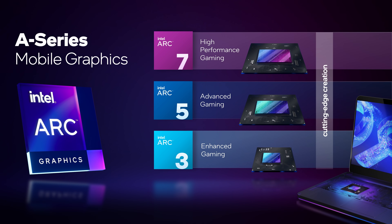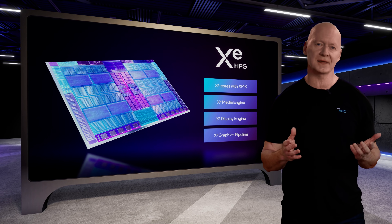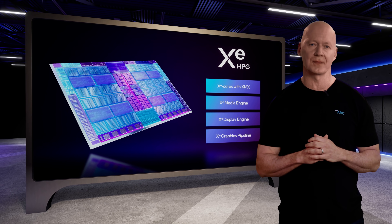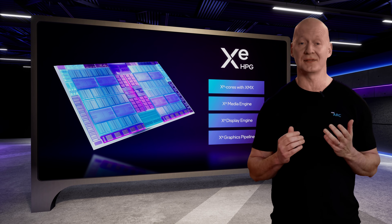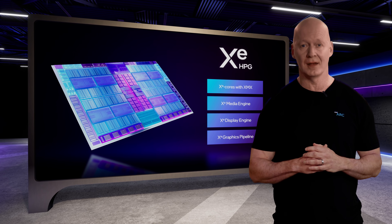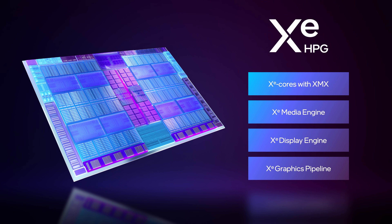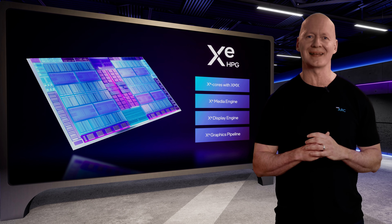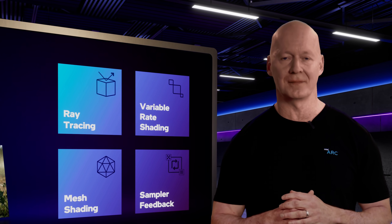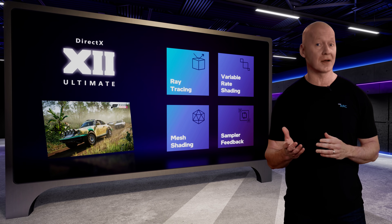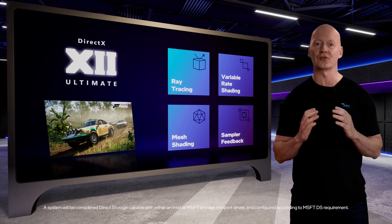Arc 5 and 7 products offer the same advanced content creation capabilities with higher graphics and compute performance. All Arc products start with our new Xe High Performance Graphics Micro Architecture, with the same powerful Xe cores with integrated AI engines that we call XMX, for accelerating AI workloads like our upcoming XeSS upscaling technology. And a new media engine tuned to accelerate existing and future creator workloads. Every Arc GPU offers full support for DirectX 12 Ultimate, including hardware-accelerated ray tracing. Arc, in conjunction with 12th Gen Intel Core processors, will be Direct Storage capable.